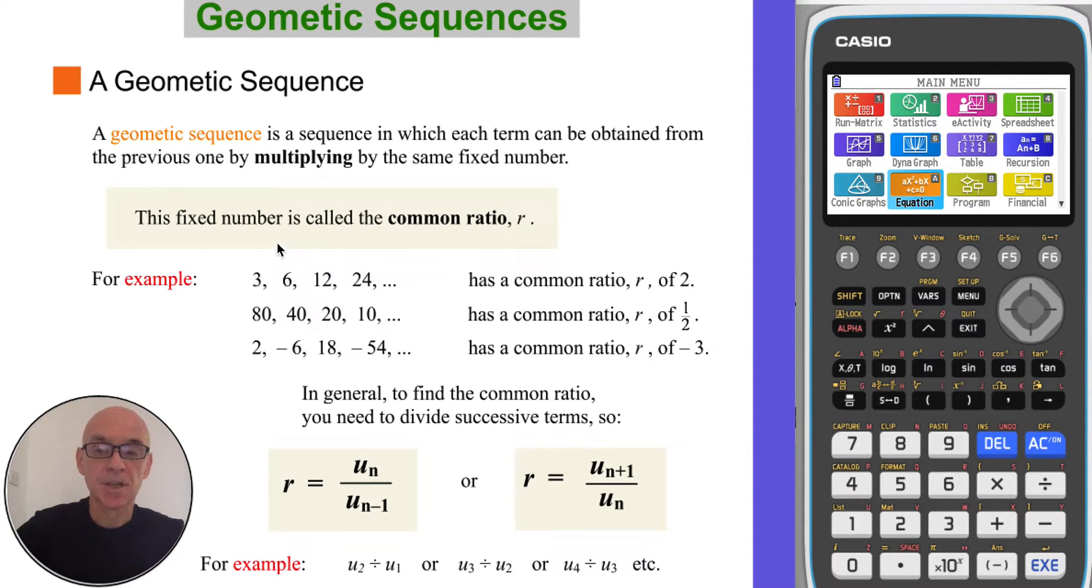In the first example shown here each term is multiplied by 2 to get to the next term, so the common ratio R is 2. In the second example each term is halved, in other words multiplied by a half, so the common ratio R is a half. In the third example each term is multiplied by negative 3, so the common ratio R is negative 3.